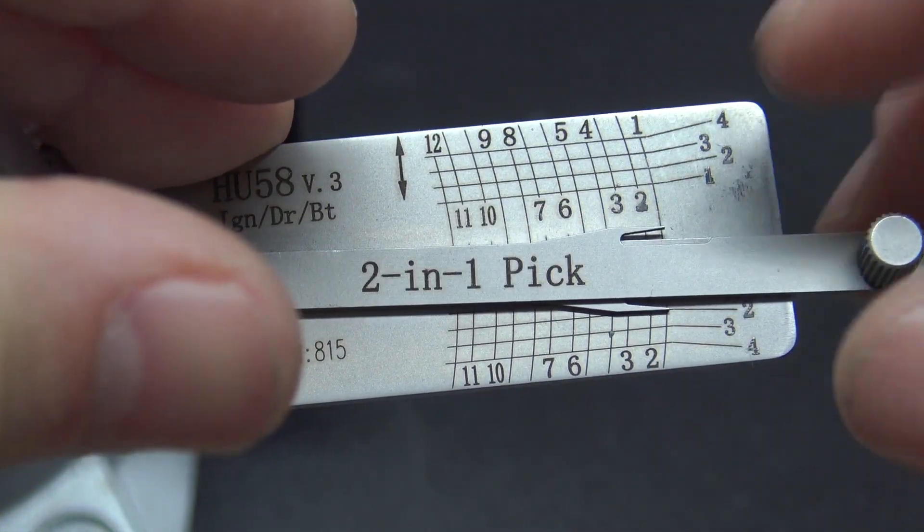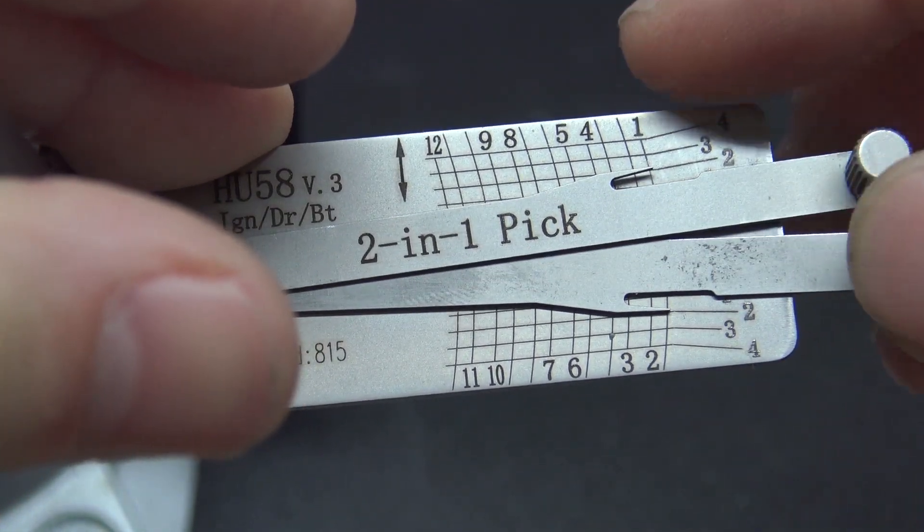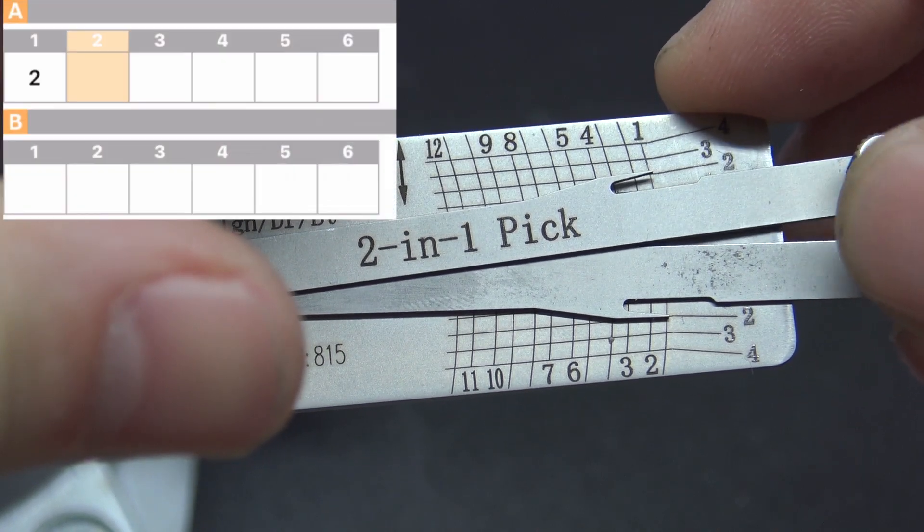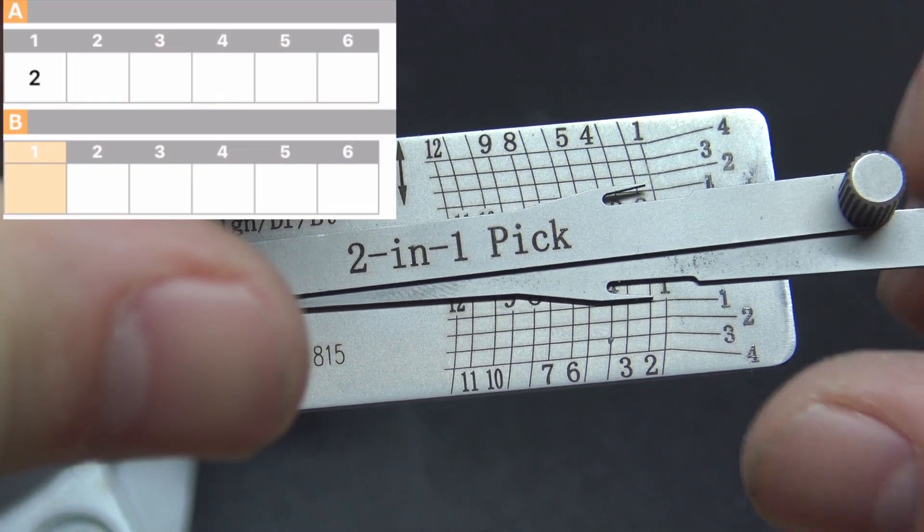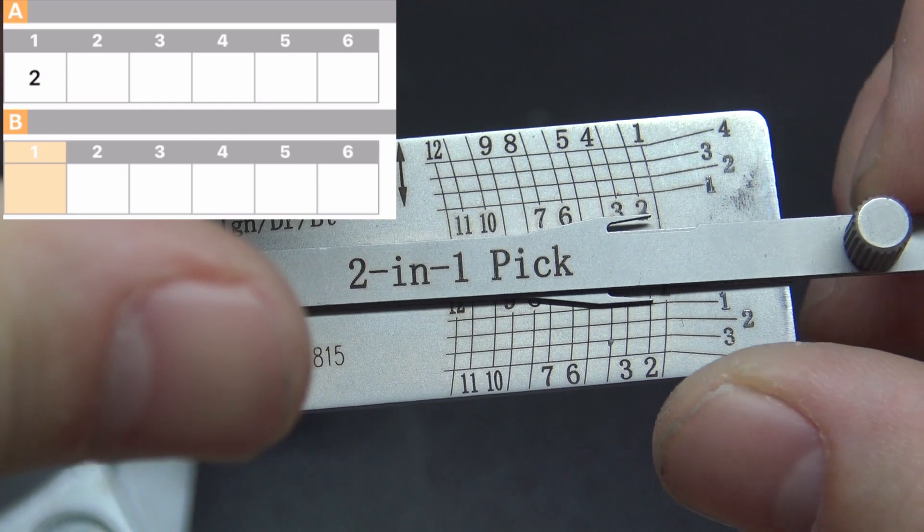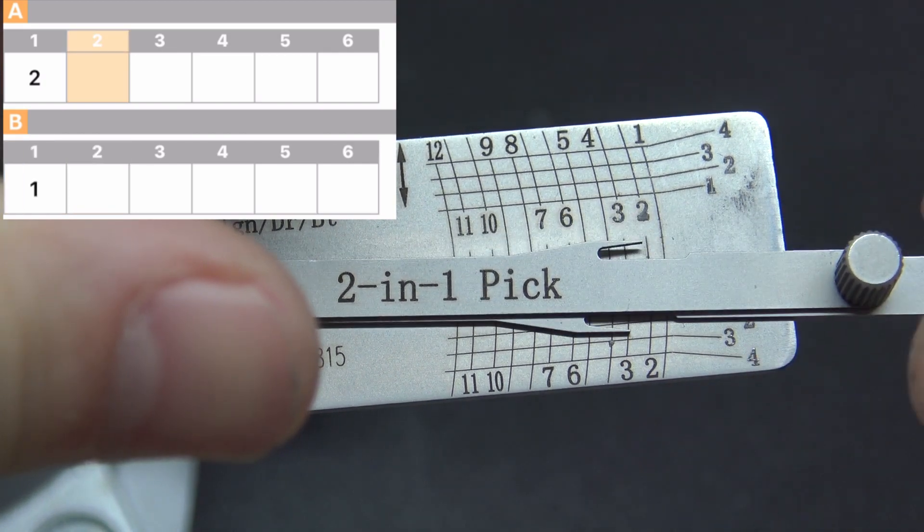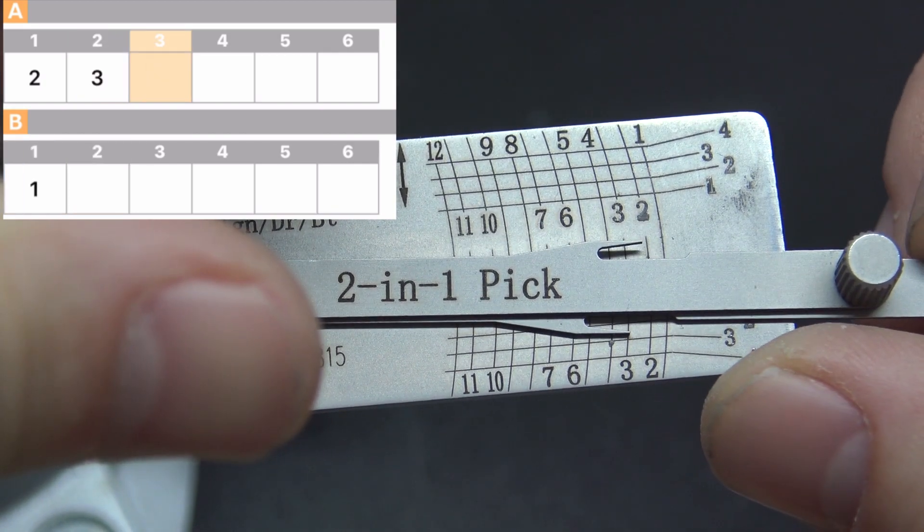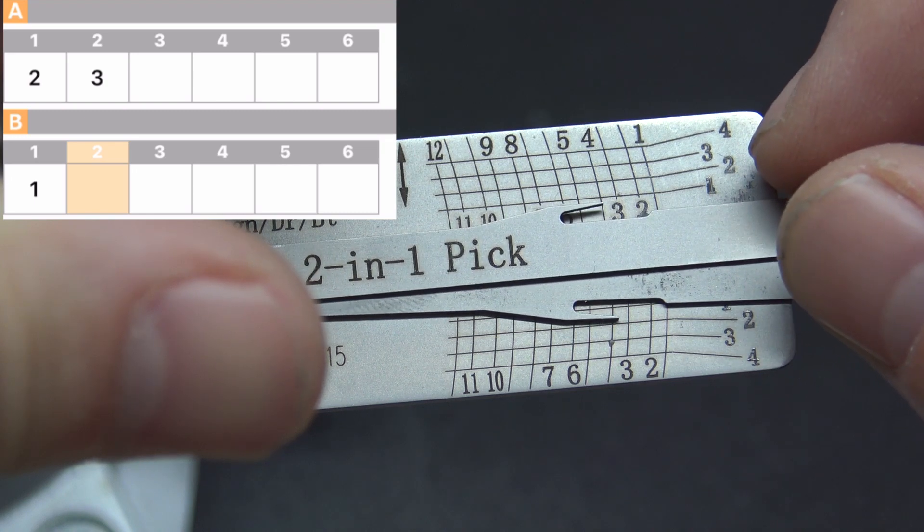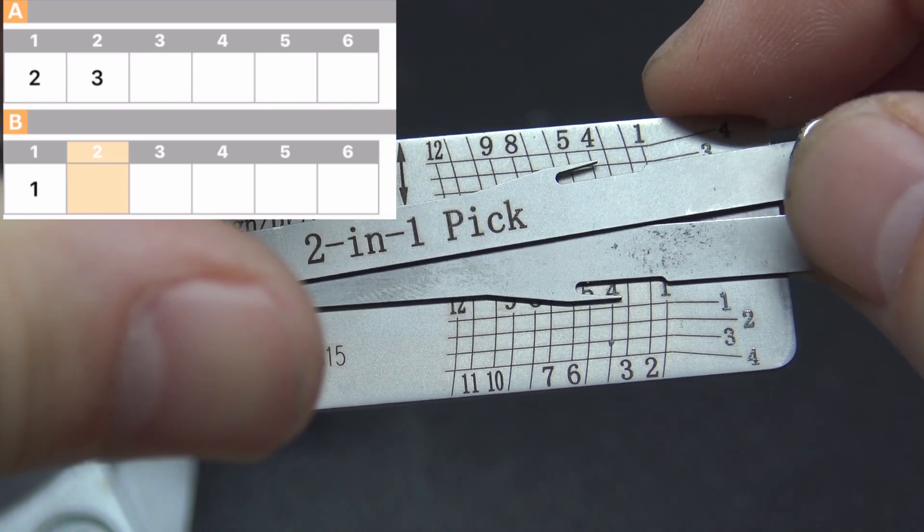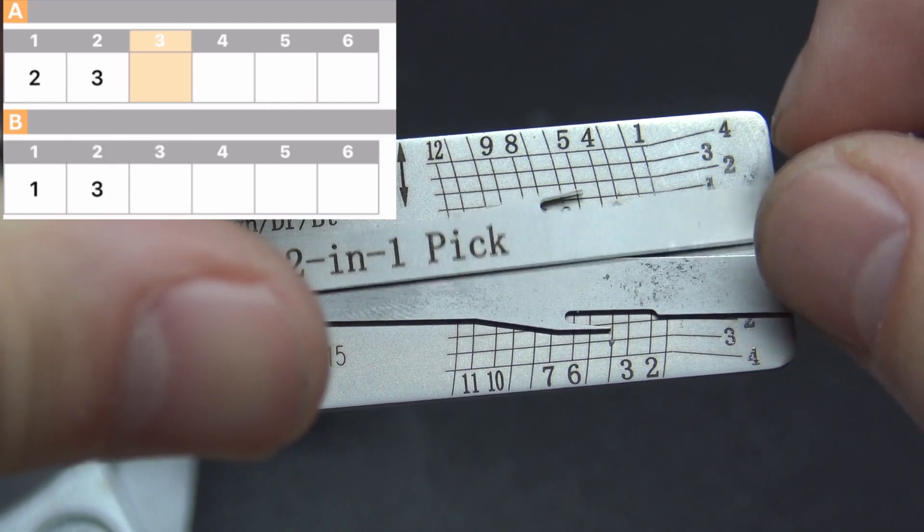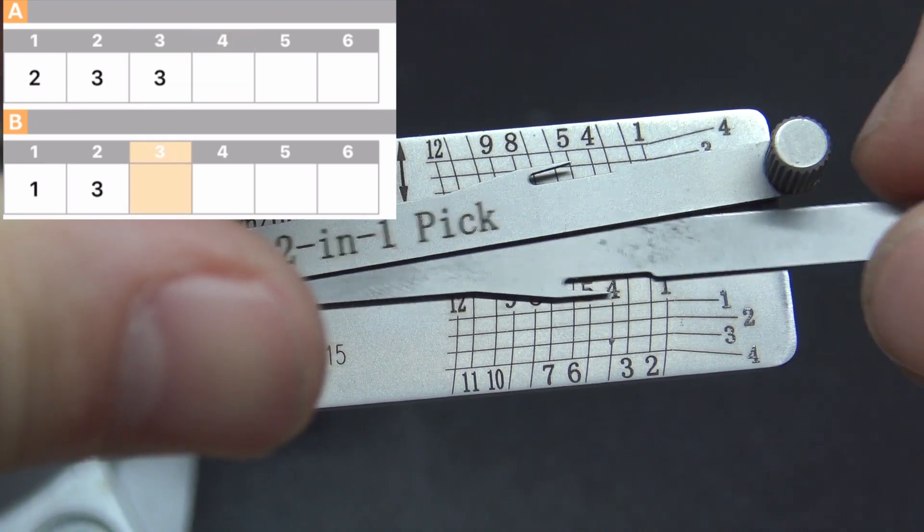Okay, so since one was picked down, we're going to use the opposite lifter and go the other way to read it. So one is a two, and then two is a one, three is a three, four is a three, five is a three.